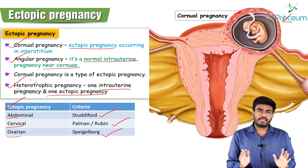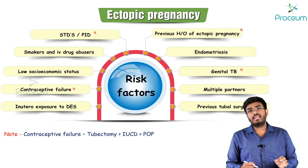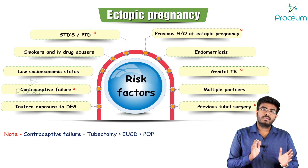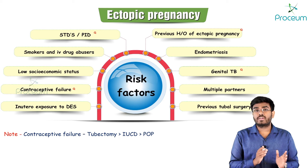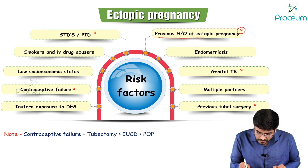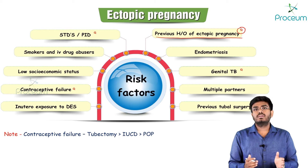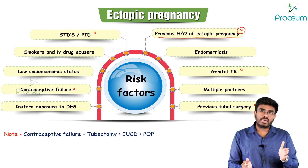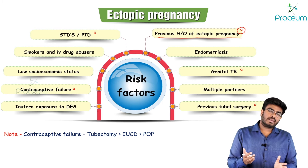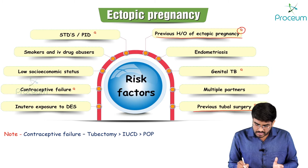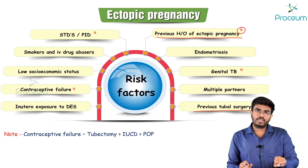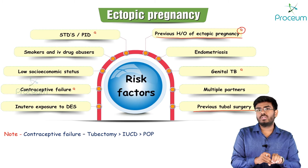Important risk factors for ectopic pregnancy include previous history of ectopic pregnancy — if you had one ectopic, the next pregnancy also has a high chance of being ectopic. Previous tubal surgeries are also a risk factor, as they can cause constrictions or obstructions in the fallopian tube, preventing the embryo from entering the uterine cavity and causing it to implant in the tube.